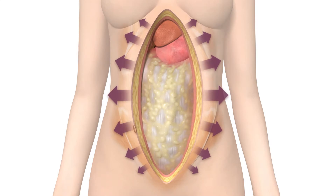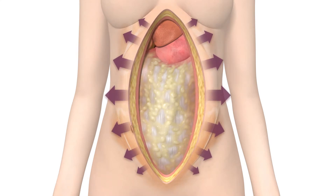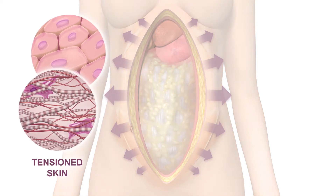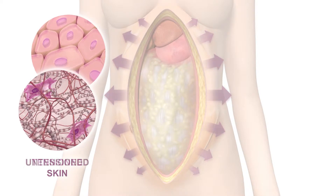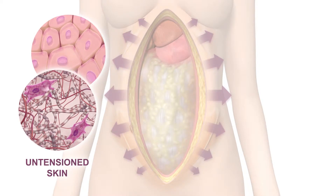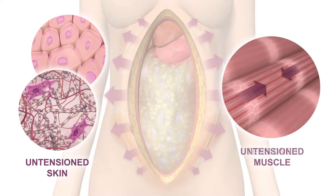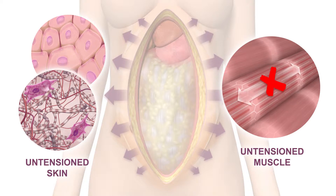During abdominal surgery, skin and muscles pull away from the wound midline. The reduced surface tension across the abdomen causes skin to retract into a stable, untensioned configuration. Muscle fibers also become fixed in a steady, retracted state, making re-approximation challenging.